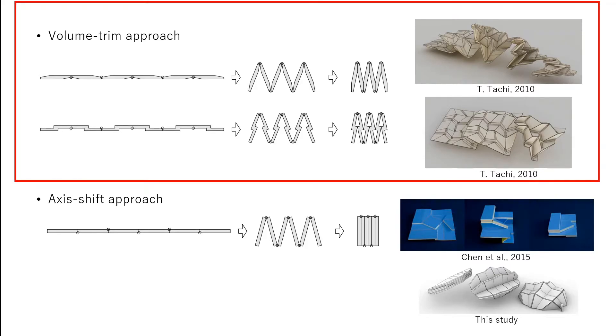Tachi proposed an approach based on trimming panel volumes. This approach is universal in the sense that the origami kinematics of rigid origami is maintained. However, obtaining a completely flat folded state is not possible as the volume starts to block the folds.